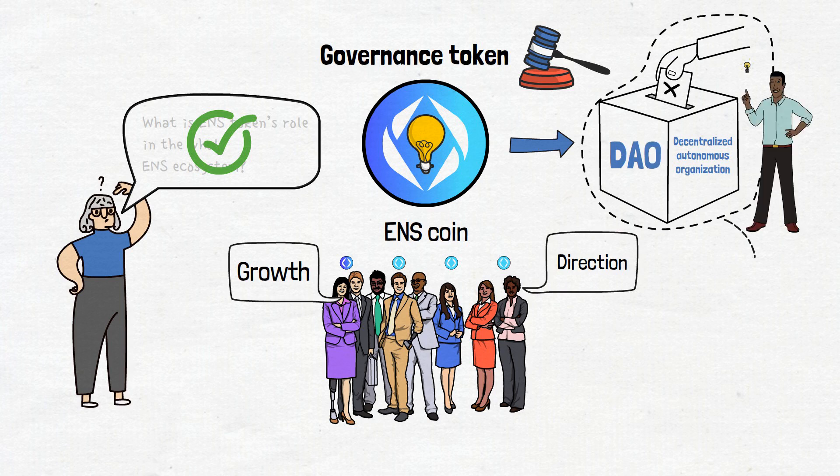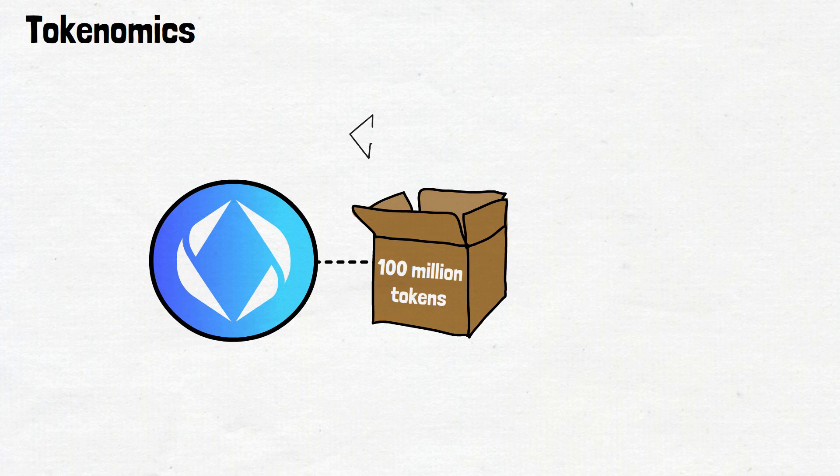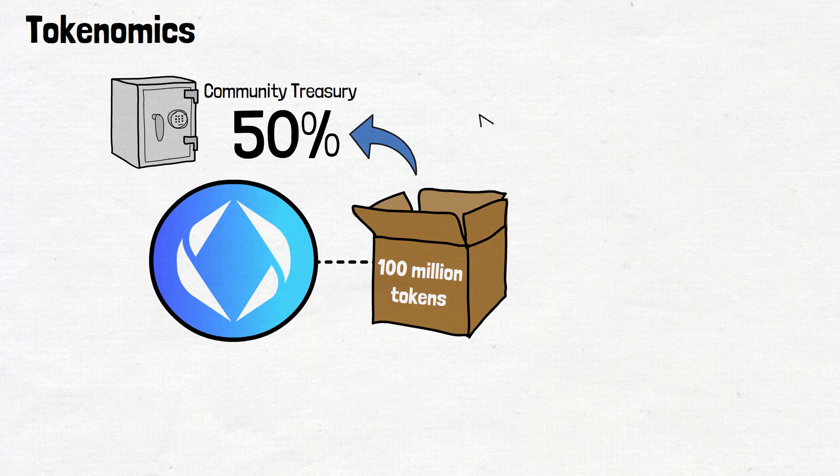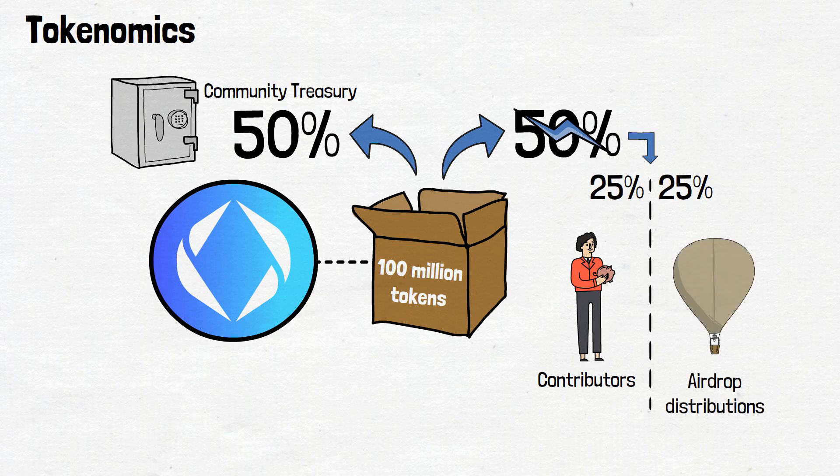If you want to know more about how DAOs operate, I have a dedicated video for this topic. Ok, back to ENS. In terms of tokenomics, the ENS coin has a hard cap of 100 million tokens. Upon launch, 50% of the tokens were moved to the community treasury. The rest of the tokens were split in half. One part of these tokens was given to the contributors, while the second part was set aside for airdrop distributions.